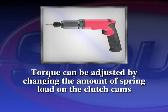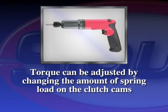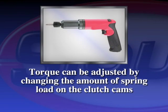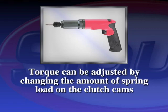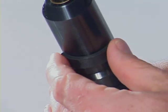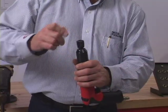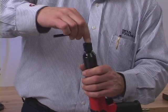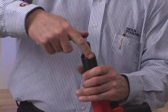Torque can be adjusted by changing the amount of spring load on the clutch cams. This is accomplished by turning the tool's adjustment nut, accessible through an opening in the clutch housing.